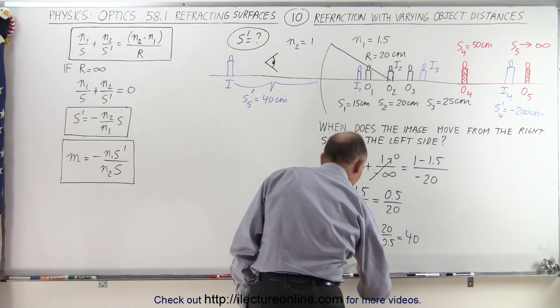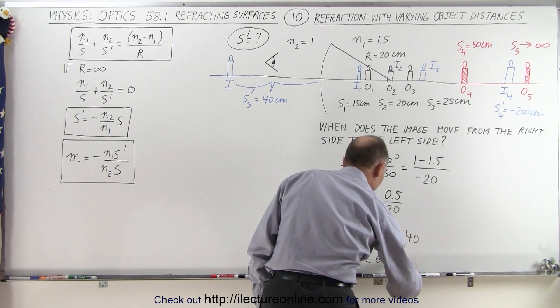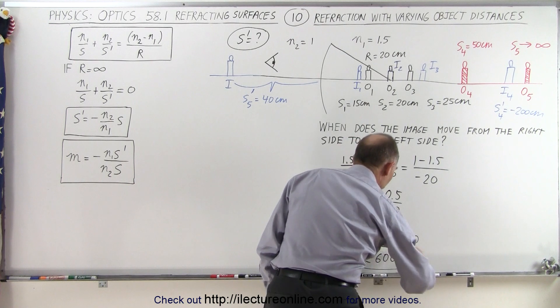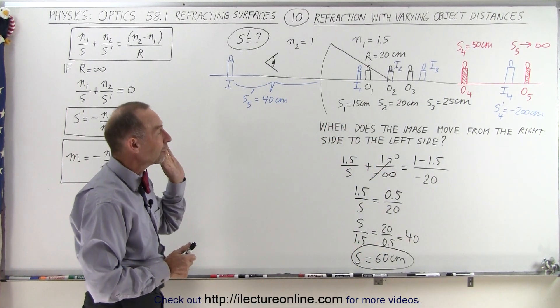And therefore S will be equal to 1.5 times 40, or 60 centimeters. So when the object distance is 60 centimeters, the image will then go out to infinity.